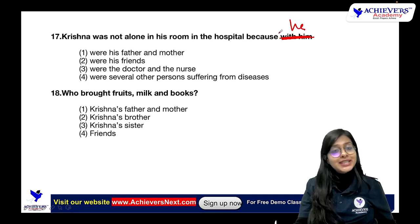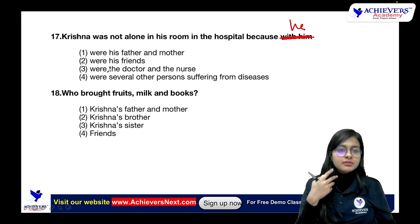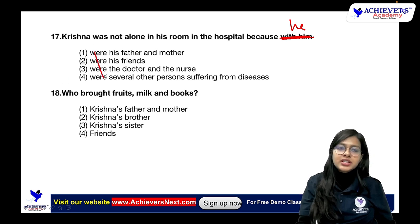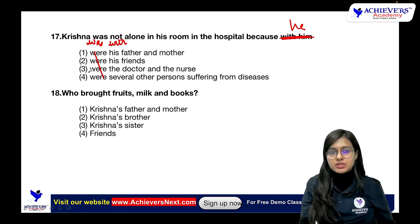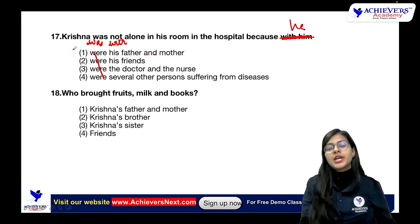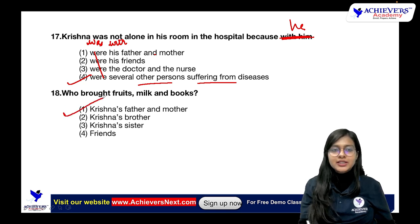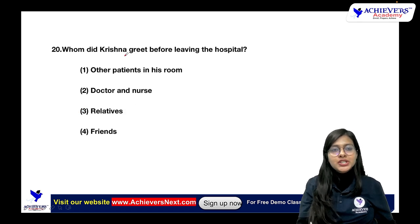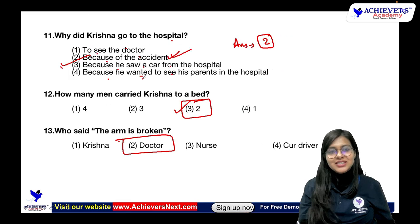Krishna was not alone in his room because he was with several other persons suffering from disease in that hall. Who brought fruits, milk, and books? His father and mother brought them. Krishna came home from the hospital within a week — direct question. Whom did Krishna greet before leaving the hospital? His room fellows — the other patients in his room. This was a very simple RC. Let's calculate your marks.